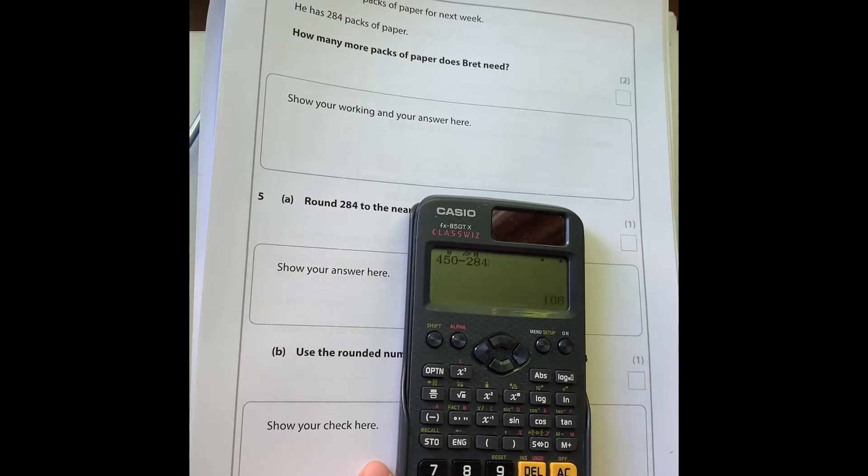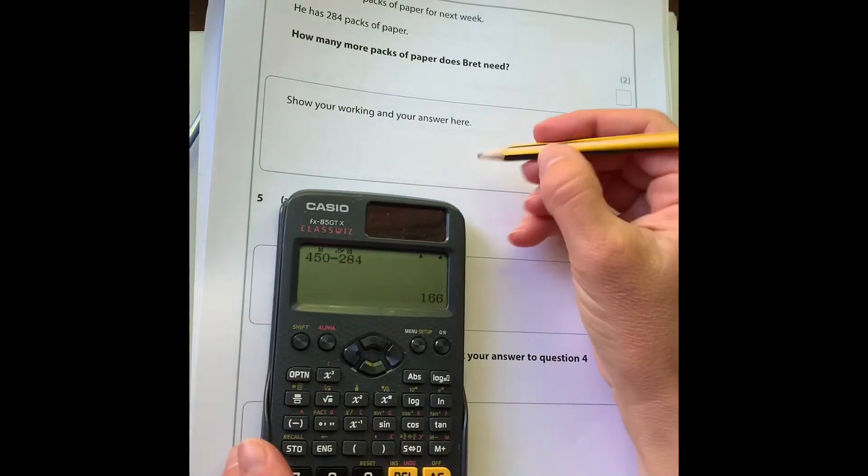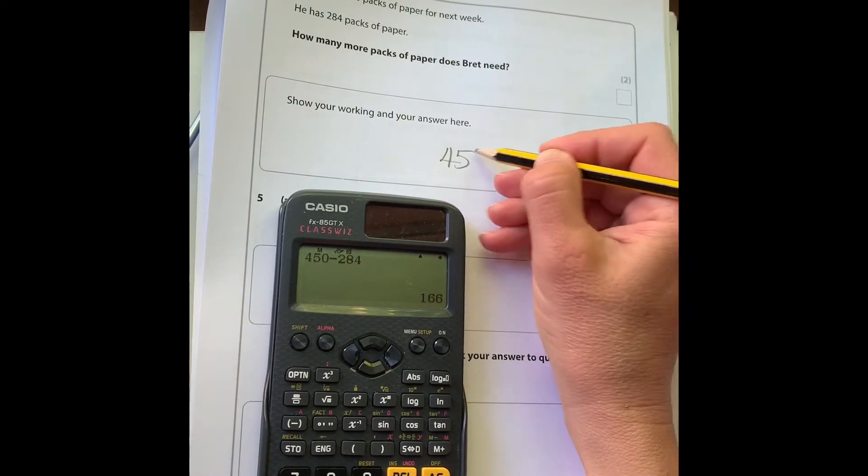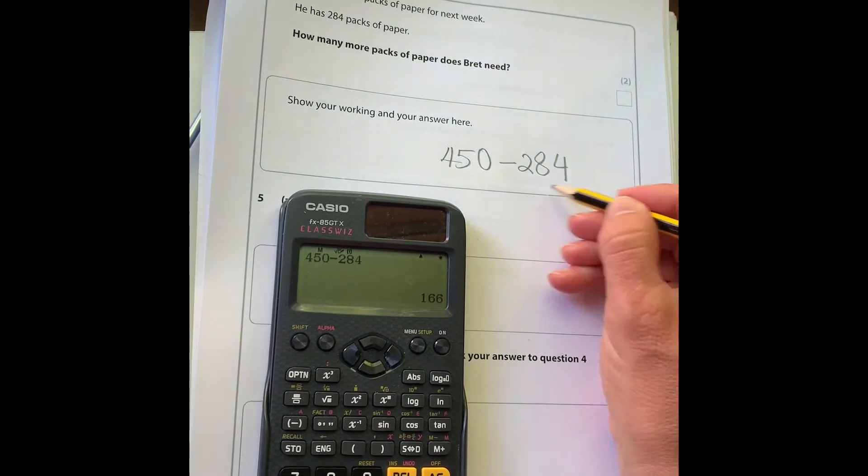That gives me 166. If you write down the sum you've done, at least if you make a mistake you'll still get a mark for the working out.